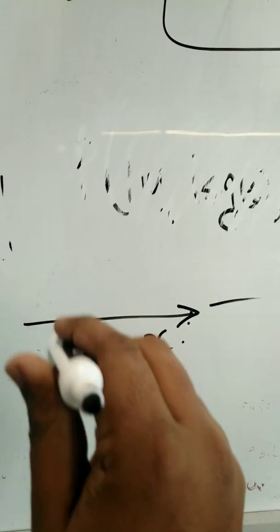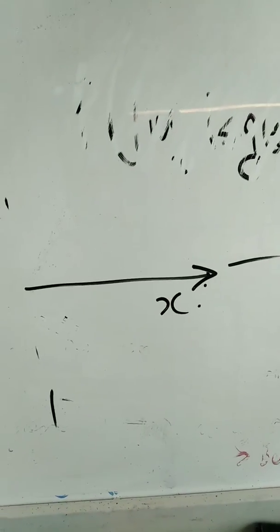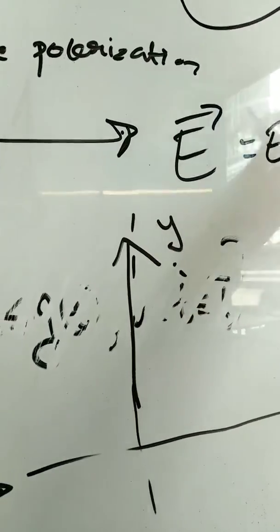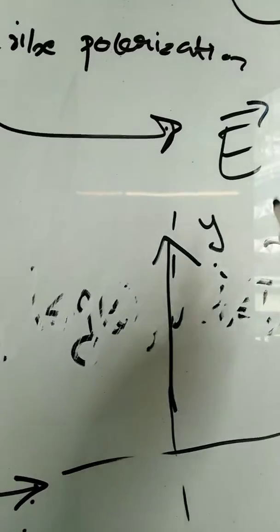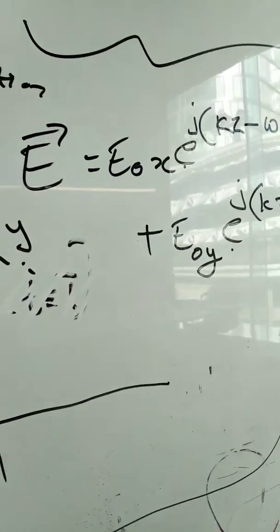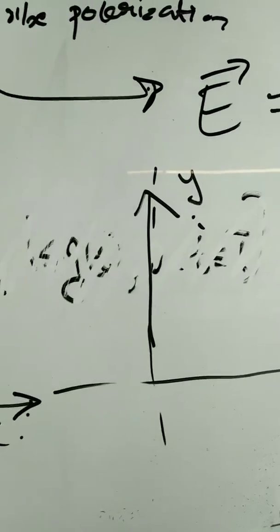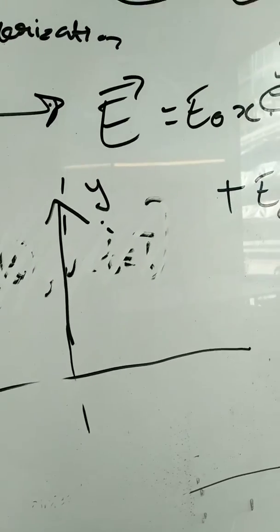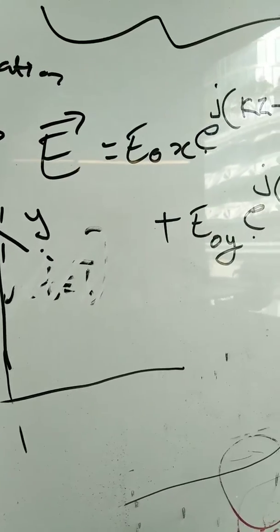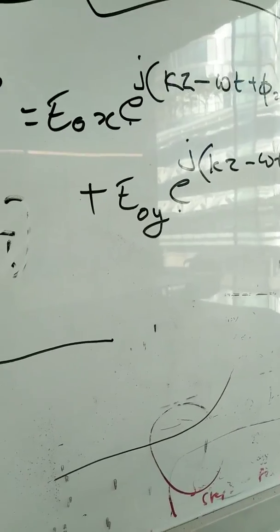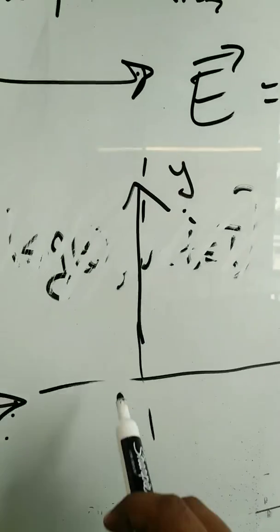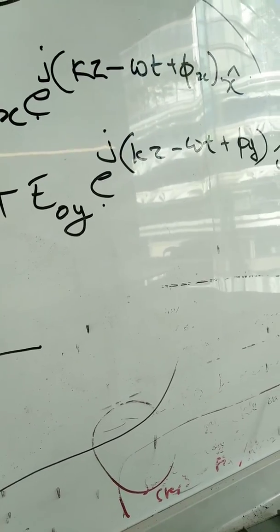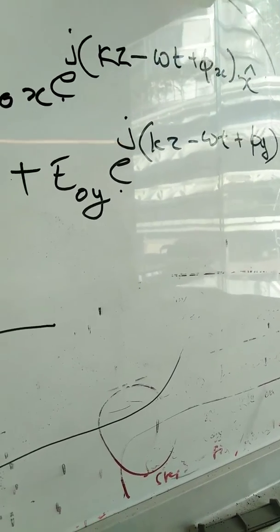Let's describe how the wave can be described mathematically. The polarization of two waves at once can be described as electric field vector E is equal to the amplitude in X direction, that is, e to the power of j times k z minus omega t plus phi x, x cap, plus the amplitude in y direction times e to the j k z minus omega t plus phi y times y cap.